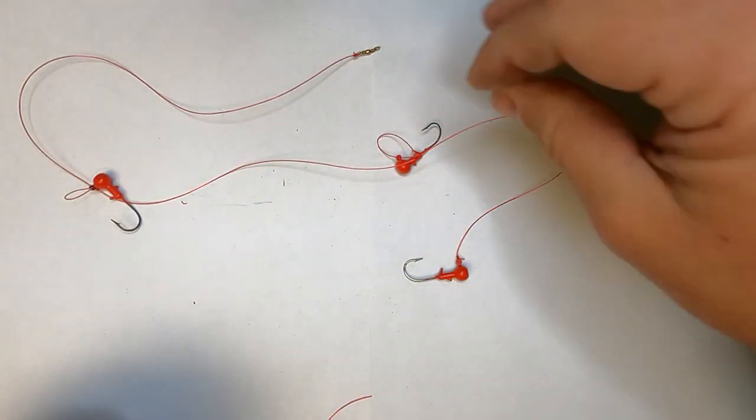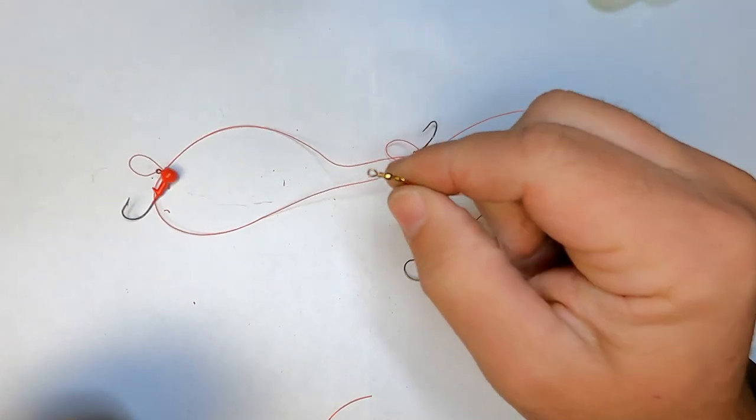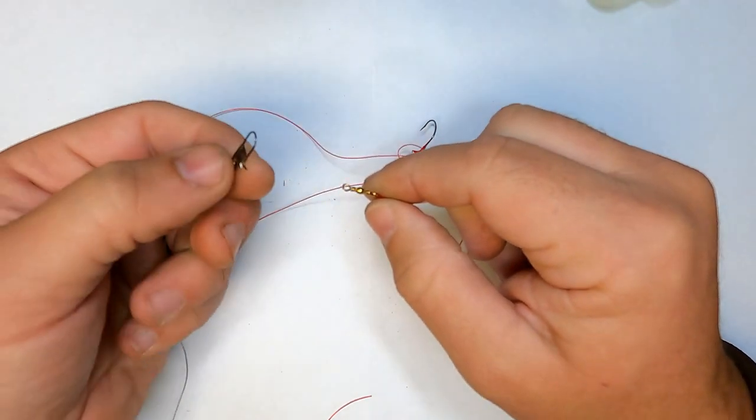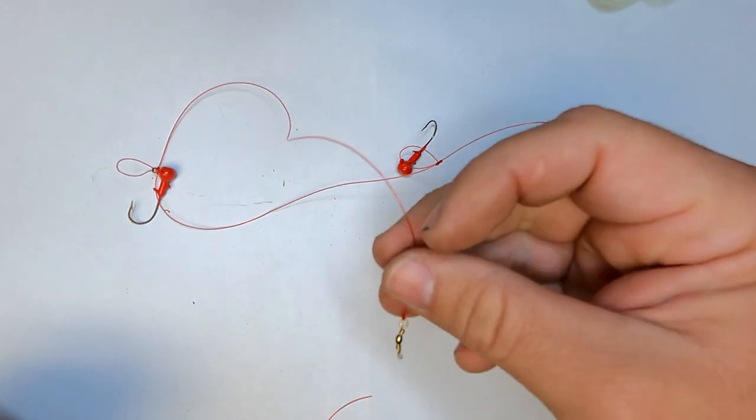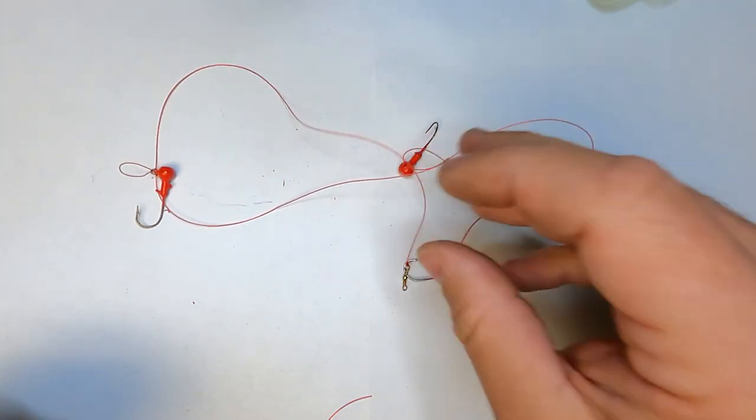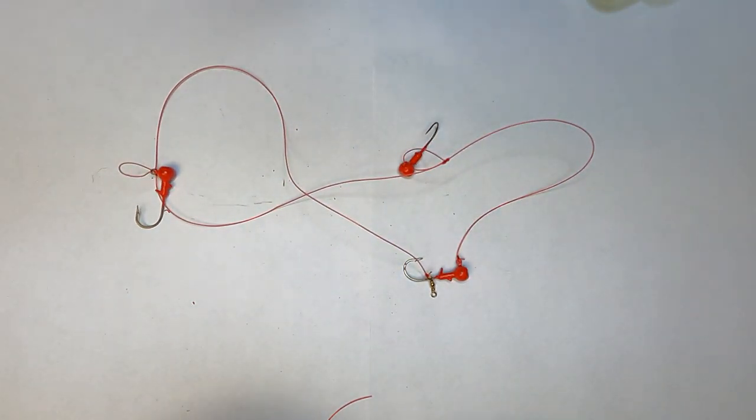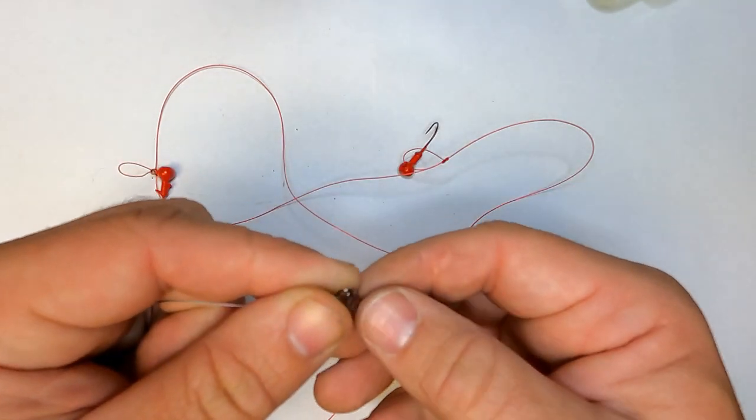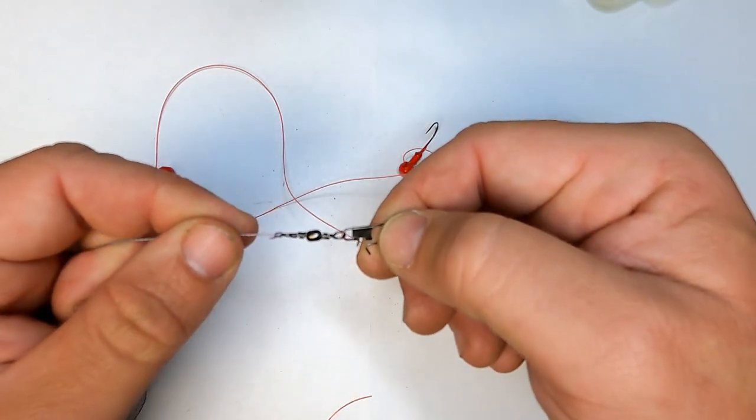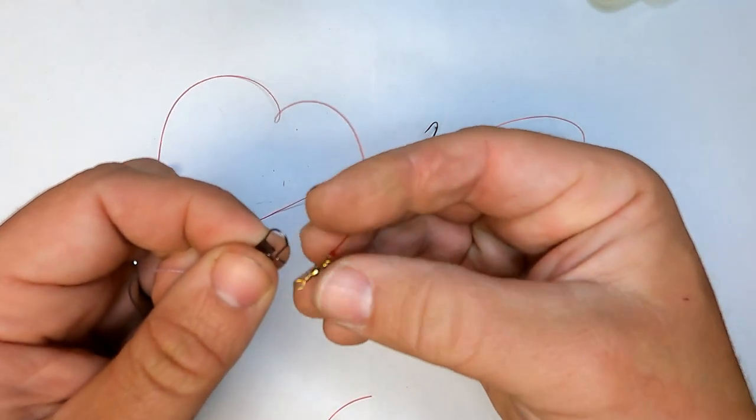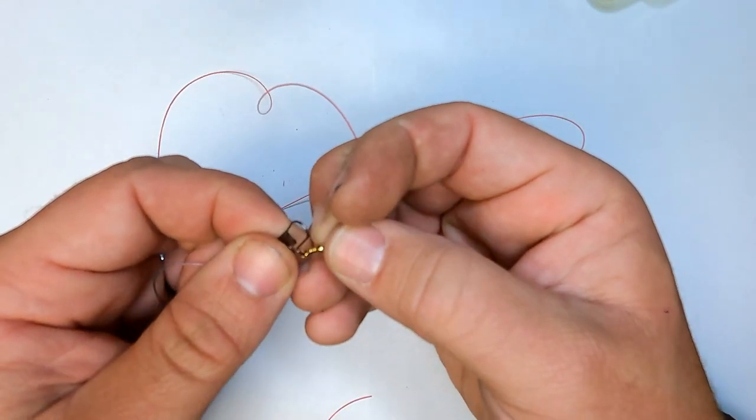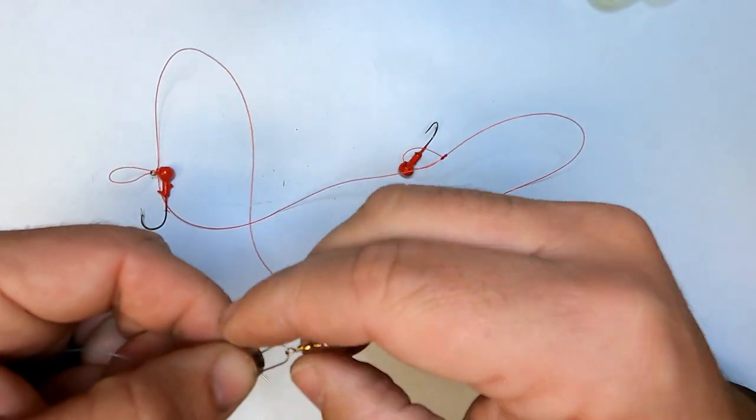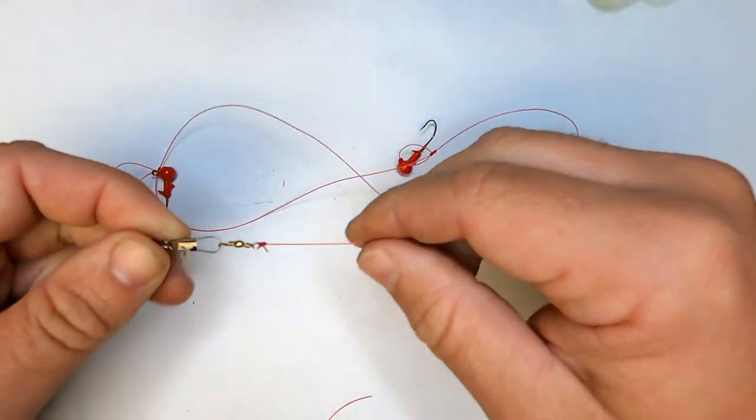One of the other advantages of using a barrel swivel when you're tying these rigs is this is 17 pound red Cajun monofilament, but the main line on my skipjack rod is 30 pound braid. So what I do, I attach a snap swivel to the braid. And then when I'm out there fishing, all I have to do is take and attach that there.